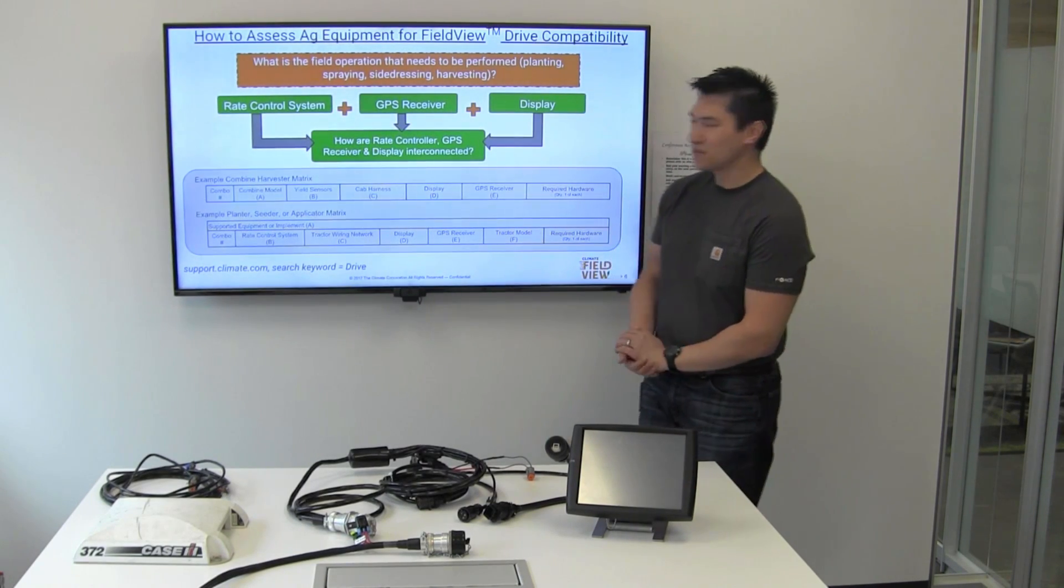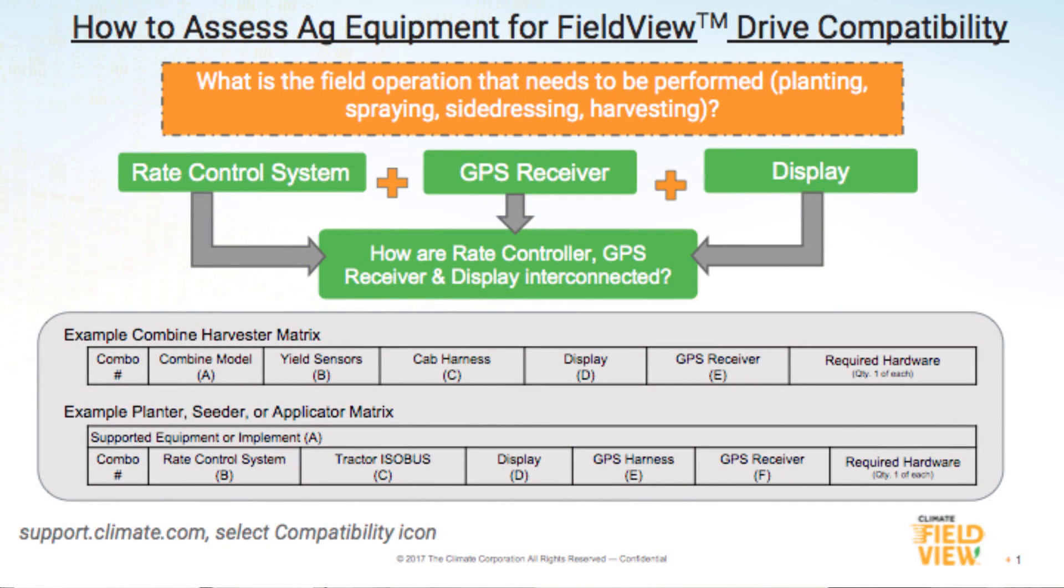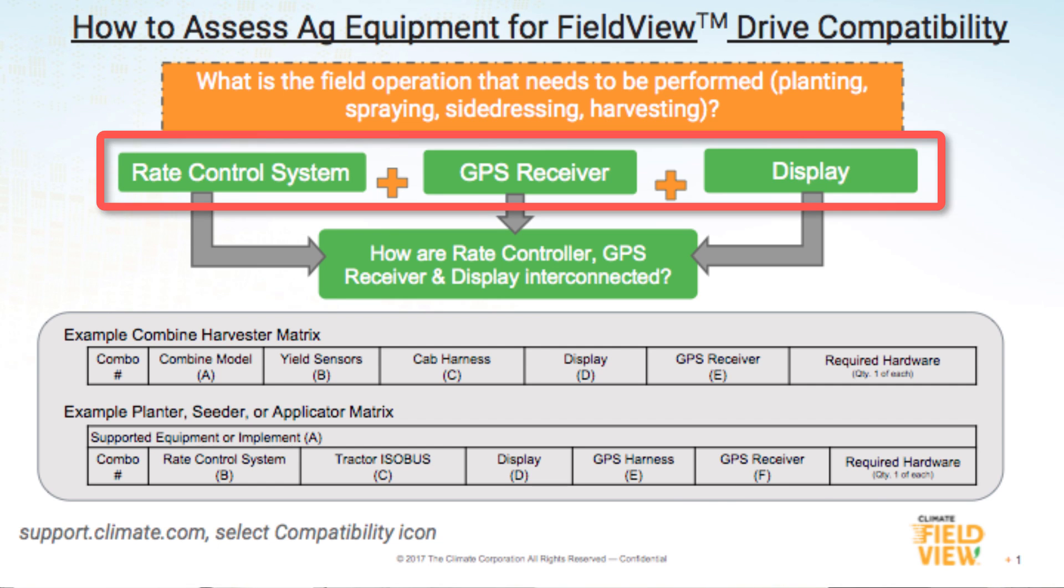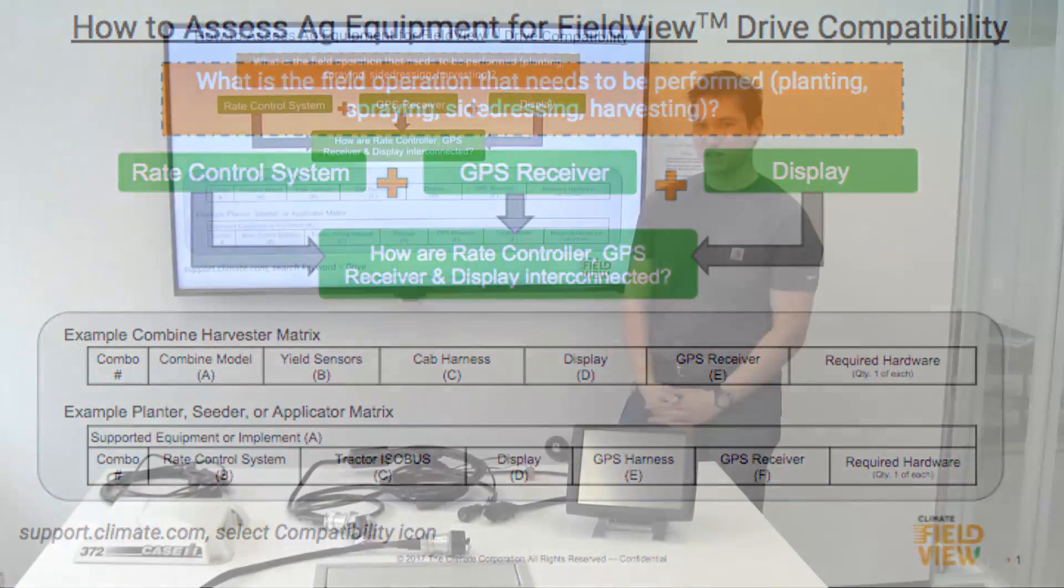What we'll begin with is what it takes to make a map of FieldView with FieldView Drive. We need some basic ingredients. Those key ingredients are the rate control system, GPS receiver, and the display. What's probably the most important of all of them is how the rate controller, the GPS receiver, and the display are all interconnected.